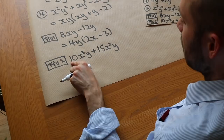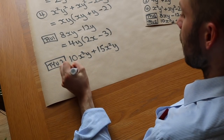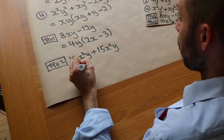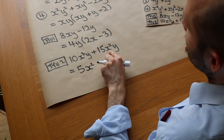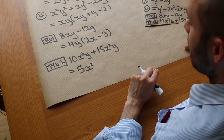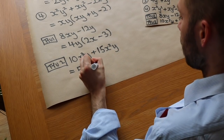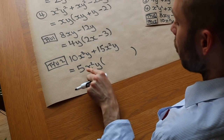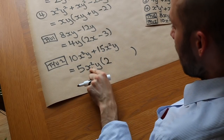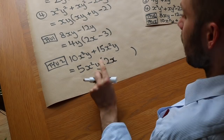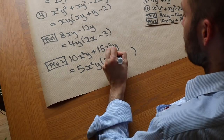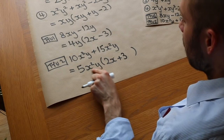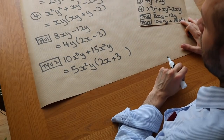For 10X³Y+15X²Y: the highest common factor of 10 and 15 is 5. For the X terms, X³ and X² have X² in common. They also share a Y. So we factorize out 5X²Y. Then 5X²Y times what gives 10X³Y? We need 2 and an additional X, so 2X. And 5X²Y times what gives 15X²Y? We need 3, and no additional X or Y is needed, so just 3. The factorization is 5X²Y(2X+3).